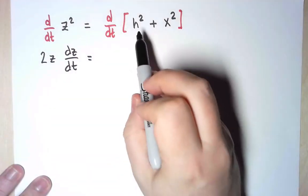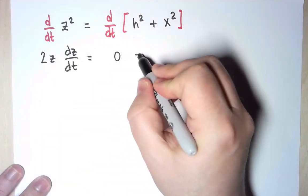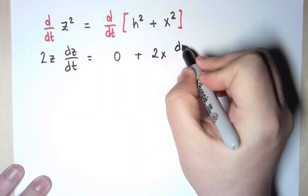On the right-hand side, remember that h was a constant, it did not depend on t, so its derivative with respect to t is 0, plus x is also a function of t, so I'm going to get 2x dx/dt.